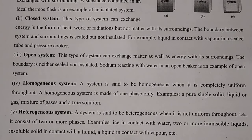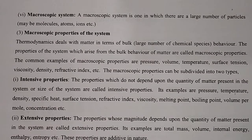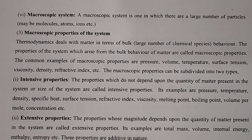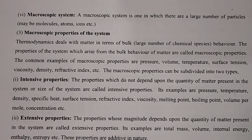So far we have covered the basic types of systems. Let's continue with the macroscopic system. 'Macro' itself suggests large molecules — like biomolecules, proteins, amino acids that have very high molar mass. A macroscopic system is one in which there are a large number of particles, which may be molecules, atoms, or ions. There are two macroscopic properties: intensive properties and extensive properties.